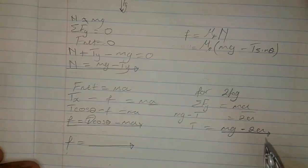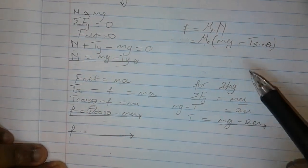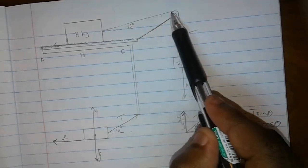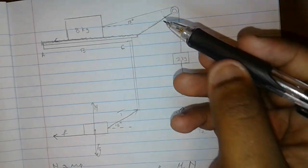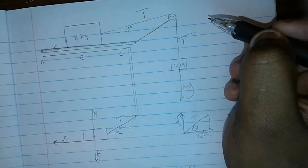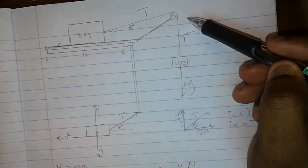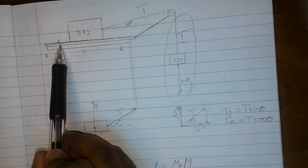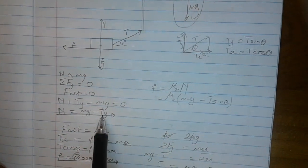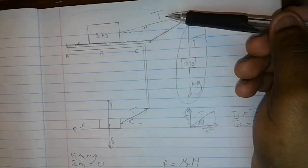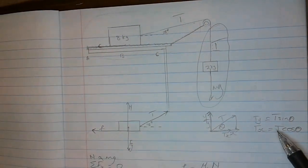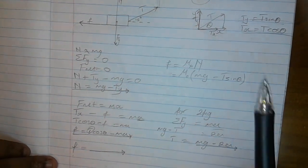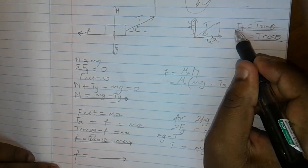These two tensions are actually the same because they act along the same string. Use the 2 kg block to get the value of T, then plug T into the 8 kg block equation to get friction or normal force. Almost everything includes the tension, so if you get the tension wrong, be careful — and if you can't resolve the tension into components, you'll lose all those marks. Be very careful about resolving forces into components.